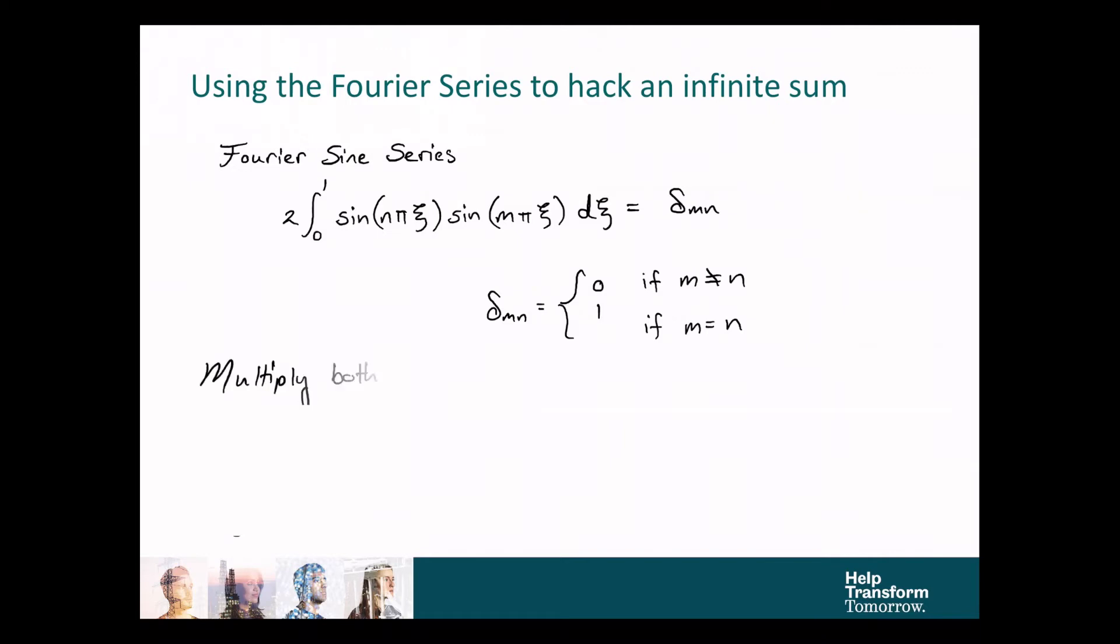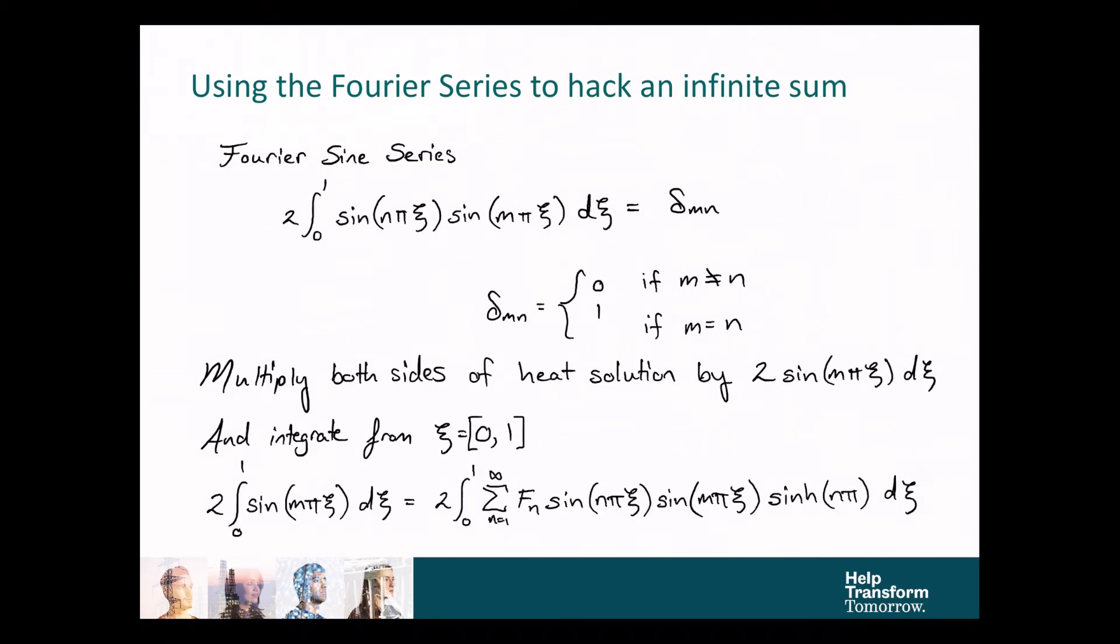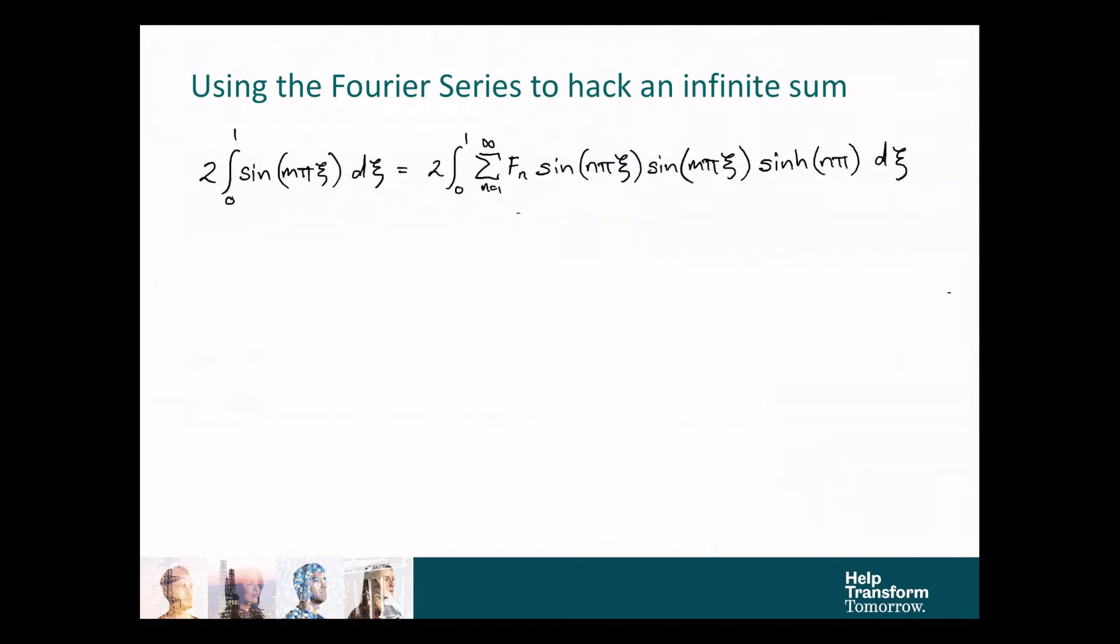So that sounds kind of tangential, and it is, but let's apply this to our problem. So, if we multiply both sides of the heat transfer solution we're looking at by 2 sine m pi xi d xi, and then integrate from 0 to 1, what we get is this expression on the left-hand side. On the left-hand side, it used to be theta equals 1, but now we've multiplied by 2 sine m pi xi d xi, and integrated it. On the right-hand side, we've got that troublesome summation term with a sine in it, but now we've multiplied that sine with an n argument by a sine with an m argument. The cinch term is basically constant with respect to xi.